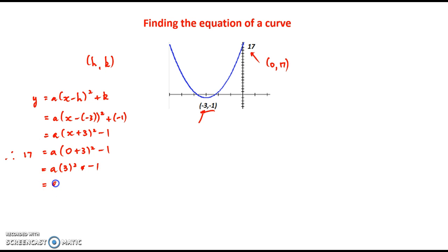So that will be 9a minus 1 equals 17. Now we can start our backtracking. I will just add 1 to both sides to make that 18 equals 9a, and then I will divide both sides by 2 and that will mean a has the value of 2.